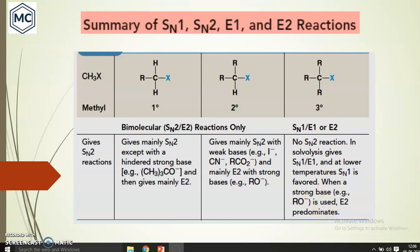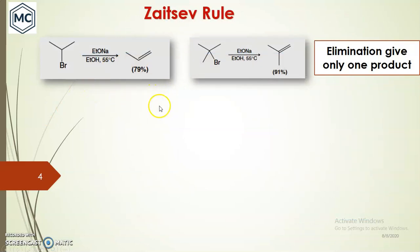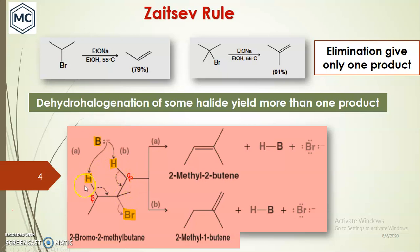Now we move to today's topic: Zaitsev's rule. Here are two examples — 2-bromopropane in the presence of a strong base gives propene, and tert-butyl halide in the presence of a base gives isobutene. In these cases there is only one possible product after elimination because all the beta hydrogens are equivalent. But what happens when there are two different beta hydrogens? It can yield more than one product.